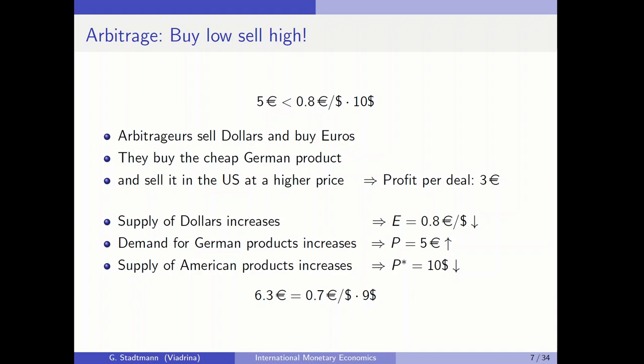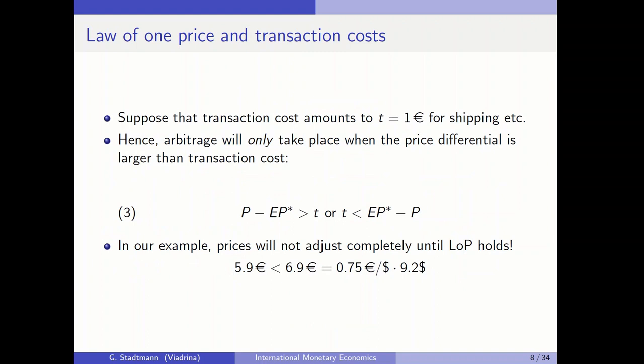This arbitrage opportunity stops when, for example, the German price increases from 5 euros to 6.3 euros, the exchange rate decreases from 0.8 to 0.7, and the American goods price decreases from 10 to 9. Once this relationship holds, the law of one price holds again and there is no arbitrage opportunity anymore. In case transaction costs play a role, arbitrage will be eliminated when the price differential equals the transaction costs.